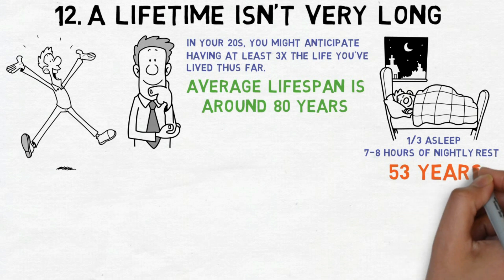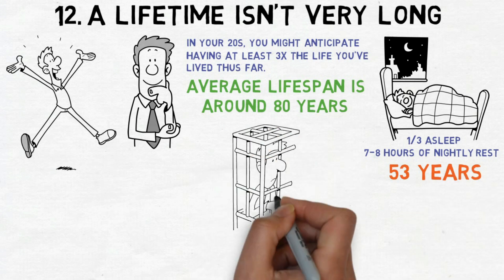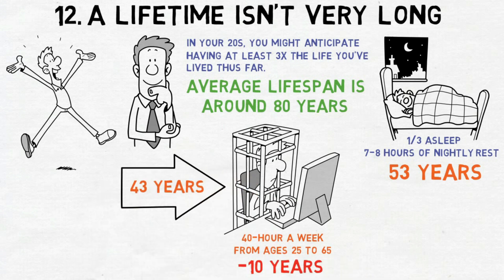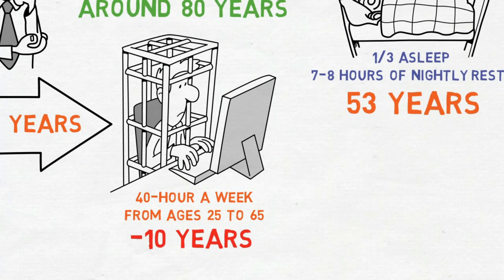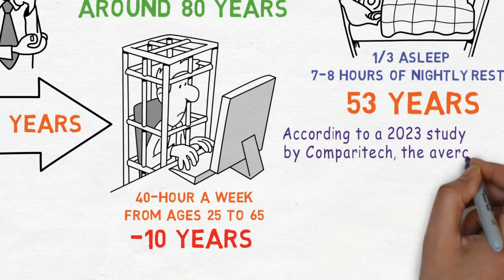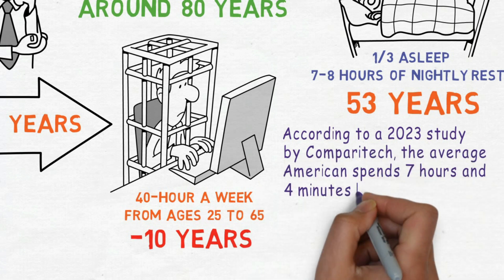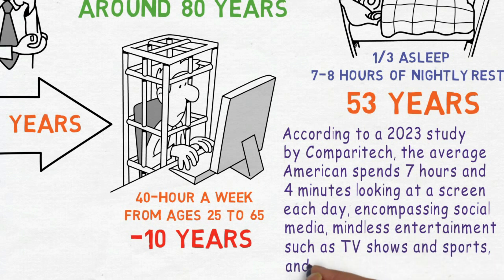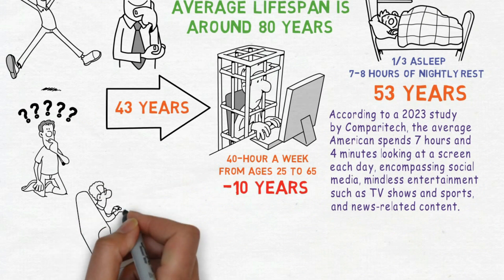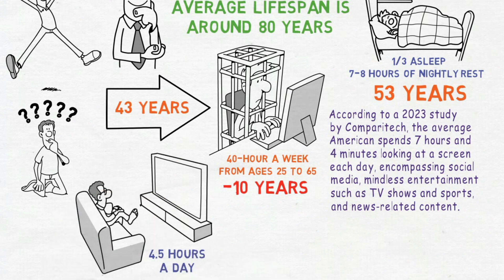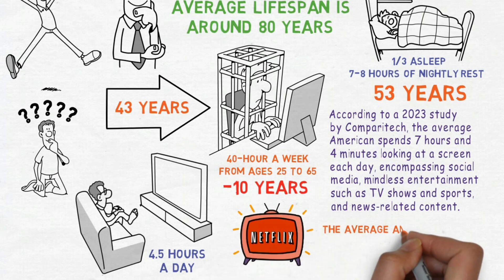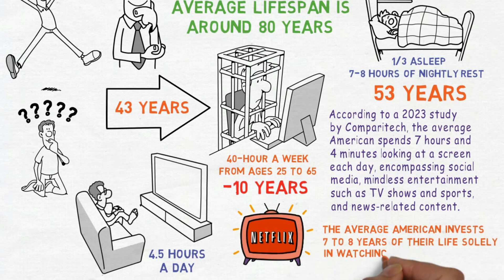Let's assume the average lifespan is around 80 years. Right from the start, most individuals spend about a third of their lives asleep, accounting for 7-8 hours of nightly rest. This leaves you with 53 years. Not bad at all, is it? Now, if the average person works a 40-hour week from ages 25-65, that's another 10 years devoted to employment. This leaves you with 43 years, which still doesn't seem too bad, does it? But, there's a problem. According to a 2023 study by Comparatech, the average American spends 7 hours and 4 minutes looking at a screen each day, encompassing social media, mindless entertainment such as TV shows and sports, and news-related content. TV show consumption alone amounts to 4.5 hours a day and is on the rise, with companies like Netflix vying for a larger share of your attention. Consequently,